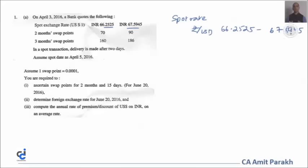We need to find the swap points for two months and 15 days, which equals 2.5 months. That's the average of the two-month and three-month swap points. So: (70 + 160) / 2 = 115 for the bid side, and (90 + 186) / 2 = 138 for the ask side. These are the 2.5-month swap points.